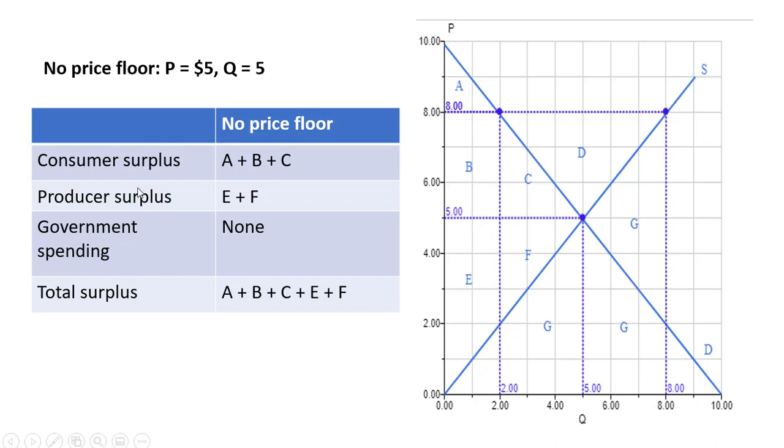First we're going to look at consumer surplus, producer surplus, government spending, and total surplus when there is no price floor. As I said before, the equilibrium price is 5 and the equilibrium quantity is 5.